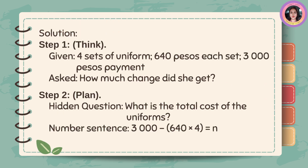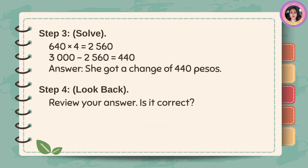Step 1: Think. Given: 4 sets of uniform, P640 each set, P3,000 payment. Asked: How much change did she get? Step 2: Plan. Hidden question: What is the total cost of the uniforms? Number sentence: 3,000 minus 640 times 4 equals N.